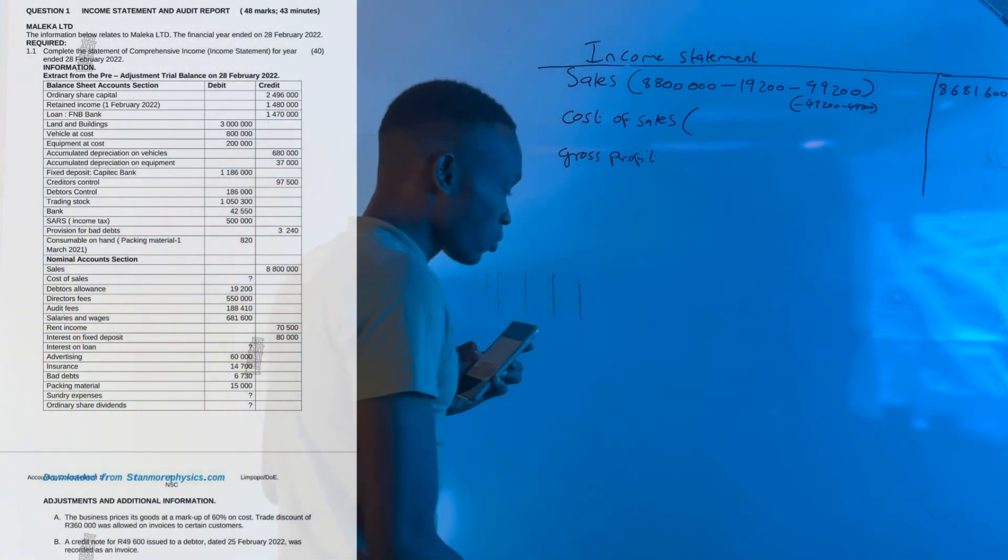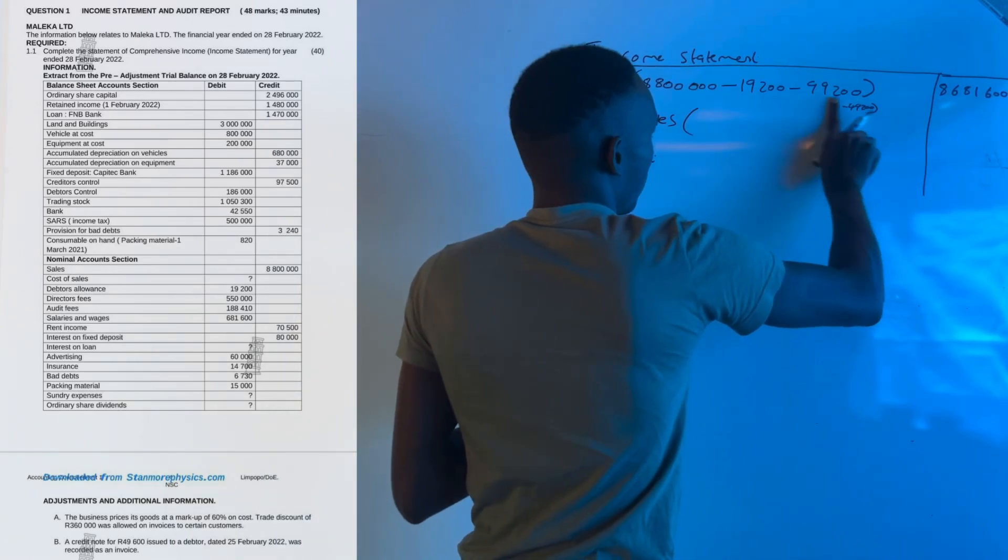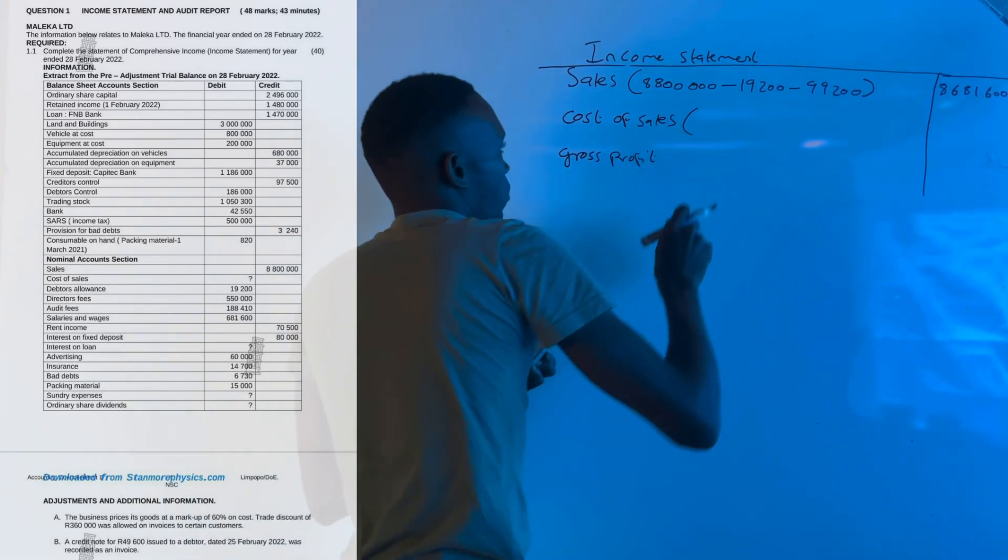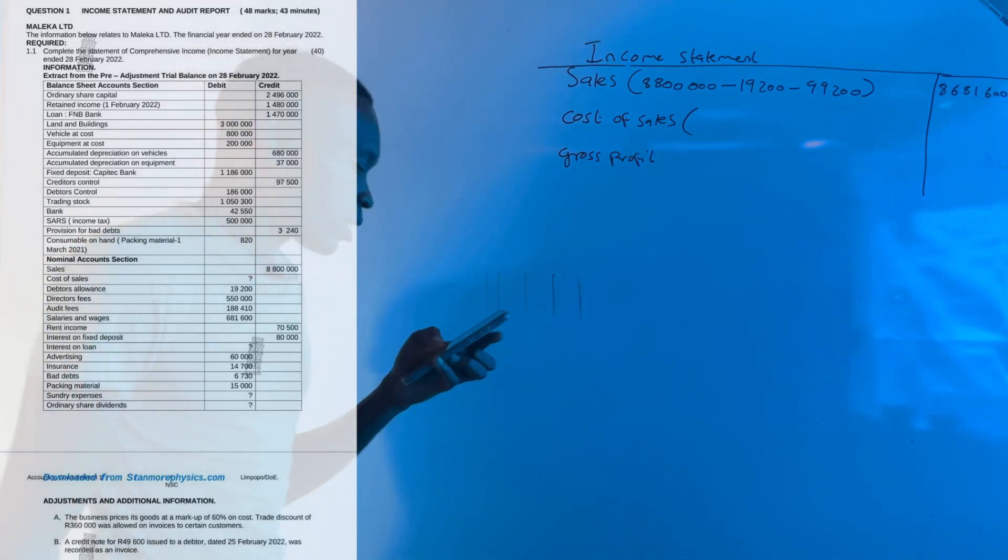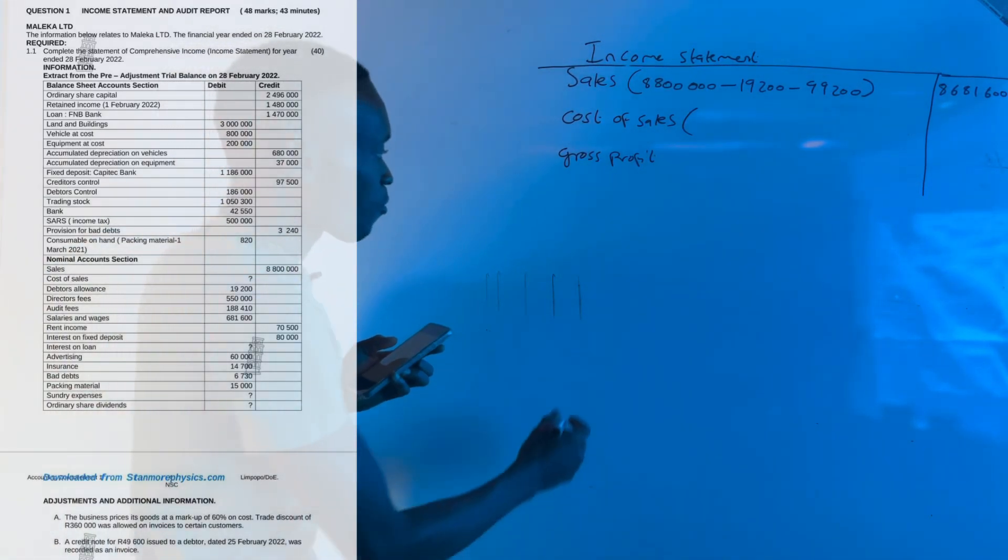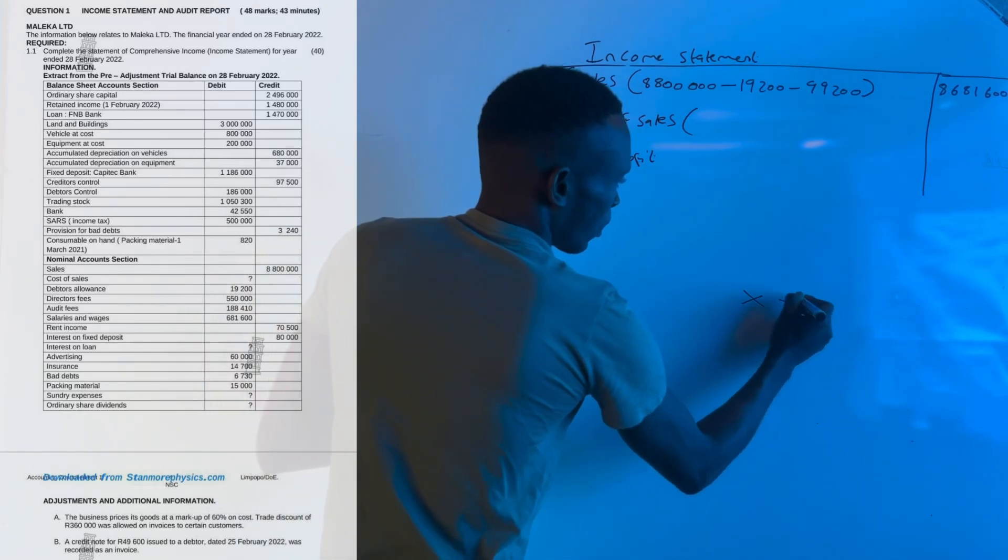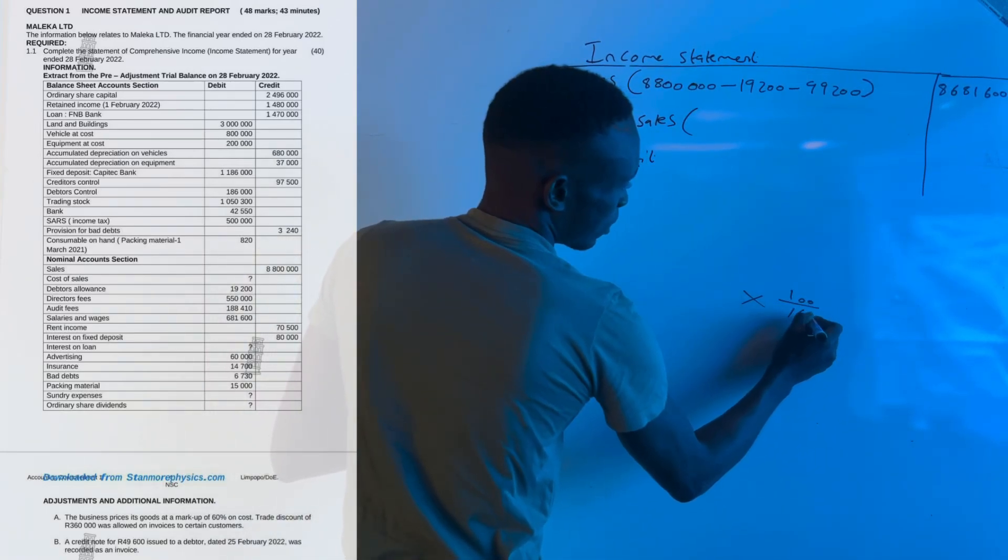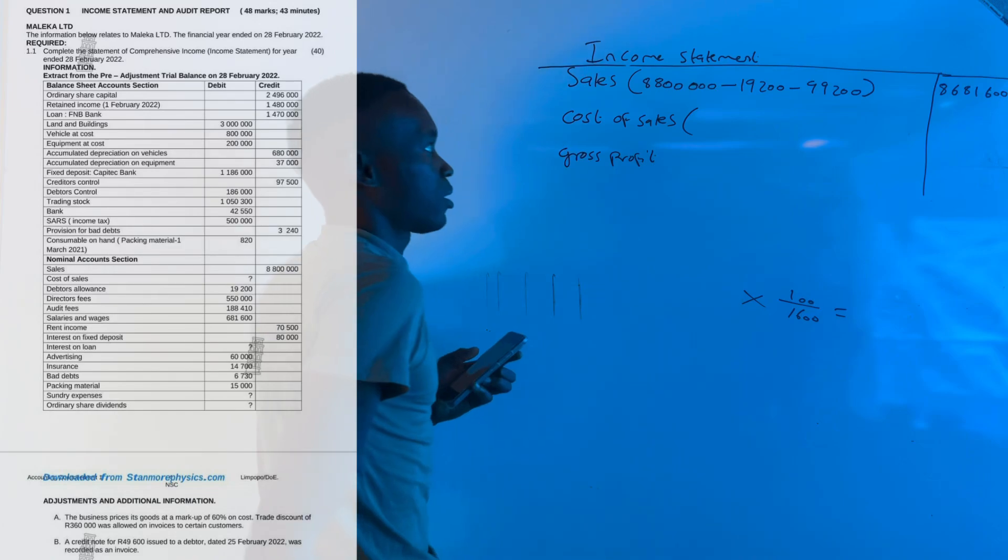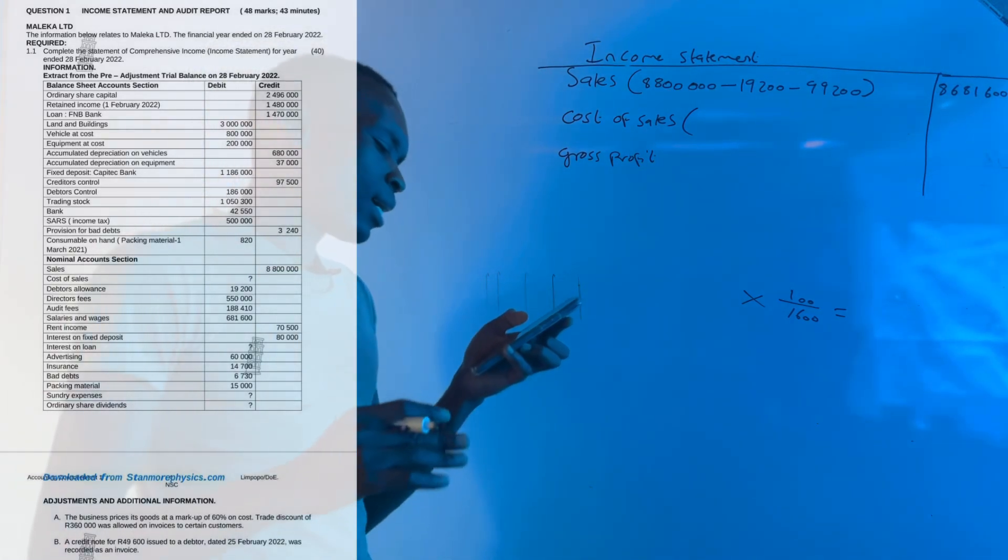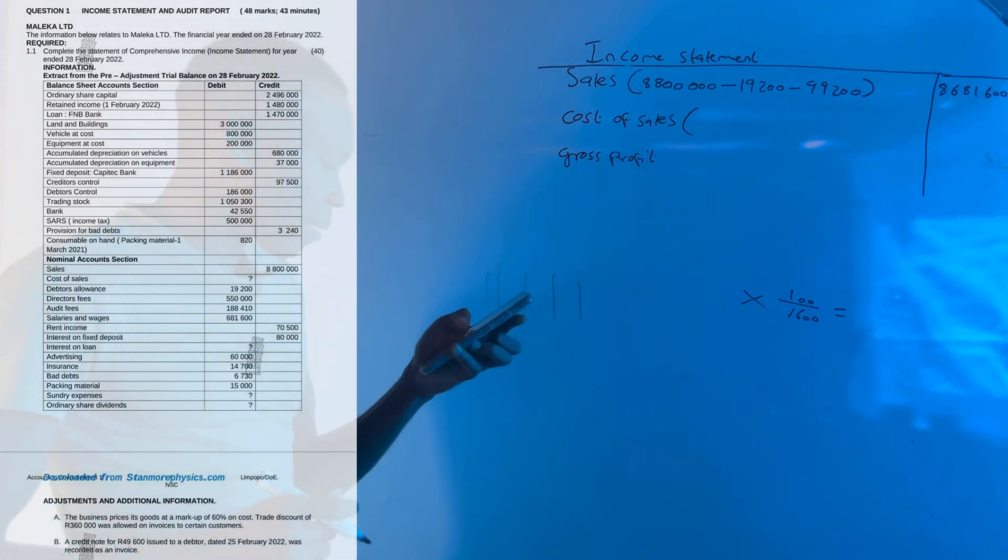How are we going to adjust cost of sales? They told us it's 60% markup, which means we can use the calculation of multiply by 100 over 160 to get our cost of sales from the sales amount.